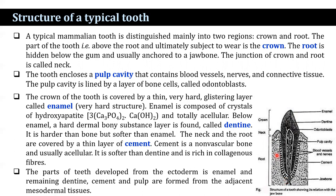The junction of the crown and root is a small portion known as the neck. The tooth encloses a cavity called the pulp cavity, which contains blood vessels, nerves, and connective tissue. The pulp cavity is lined by a layer of bone cells known as odontoblasts. The crown of the tooth is covered by a thin, very hard, glistening layer called enamel. Enamel is composed of crystals of hydroxyapatite and is totally acellular.